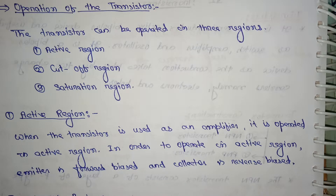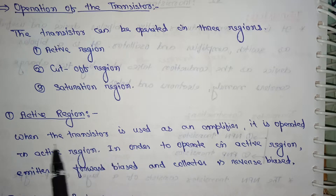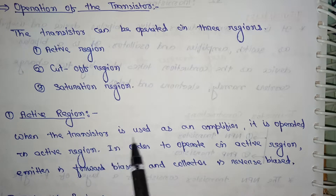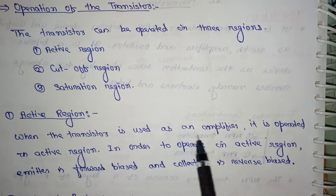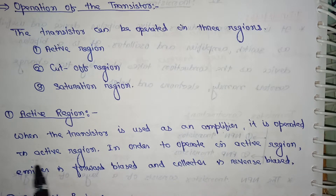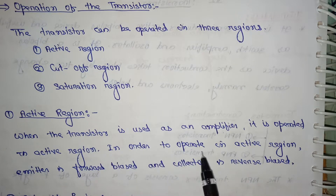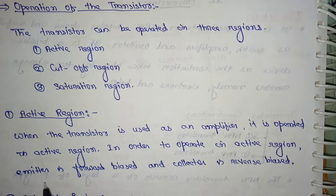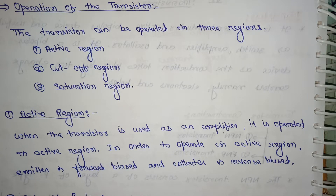First, the active region. When the transistor is used as an amplifier, it is operated in the active region. In order to operate in the active region, the emitter is forward biased and the collector is reverse biased.